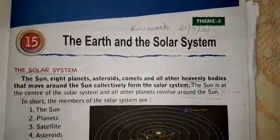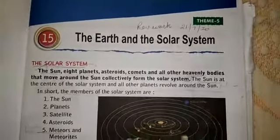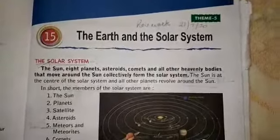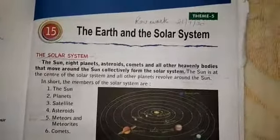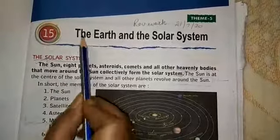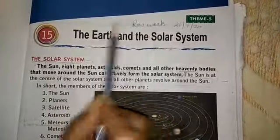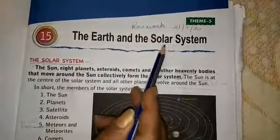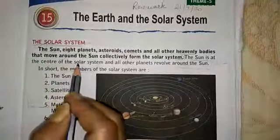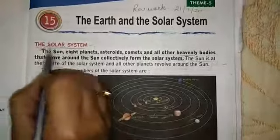Good morning children. Now we will begin with our social study revision work, so all of you take out your social study reader and Lesson 15: The Earth and the Solar System. Now first you will read this lesson — it is a very big lesson and you have to learn quite a lot of things in it.